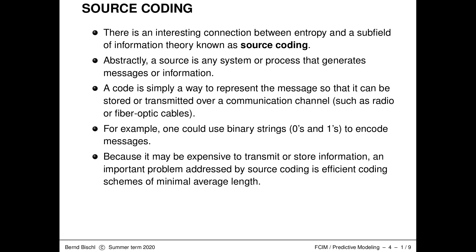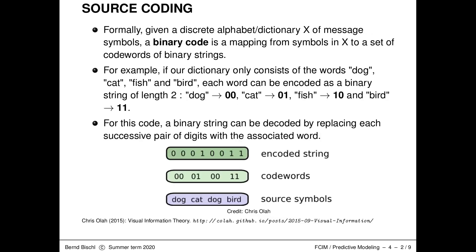We don't want to spend more bits than necessary to encode our messages. Let's formalize this. I'll assume we're given a dictionary or alphabet of message symbols — a finite set of all potential messages we want to transmit. A binary code is simply a mapping from all symbols in X to code words of binary strings. As a running example, our dictionary consists of four animal-related words: dog, cat, fish, and bird.